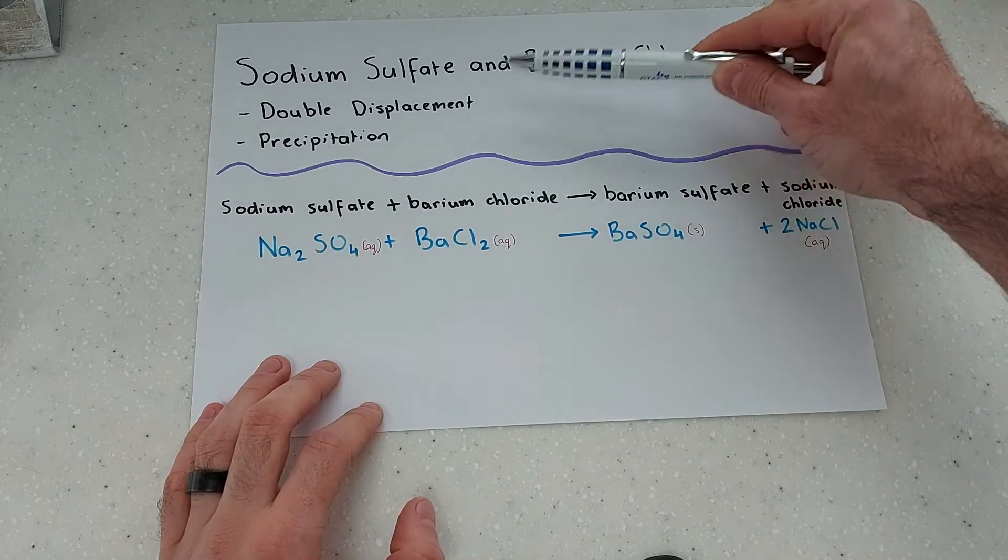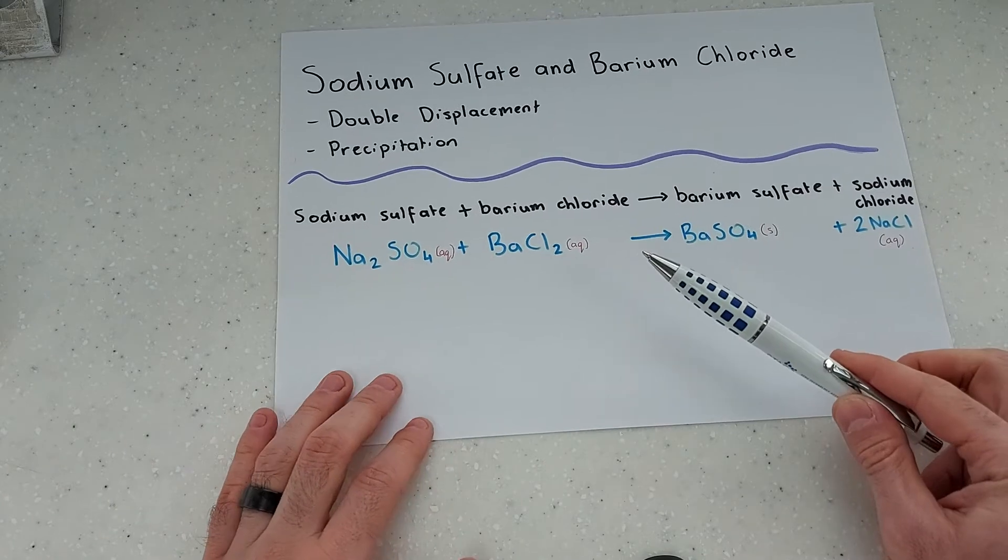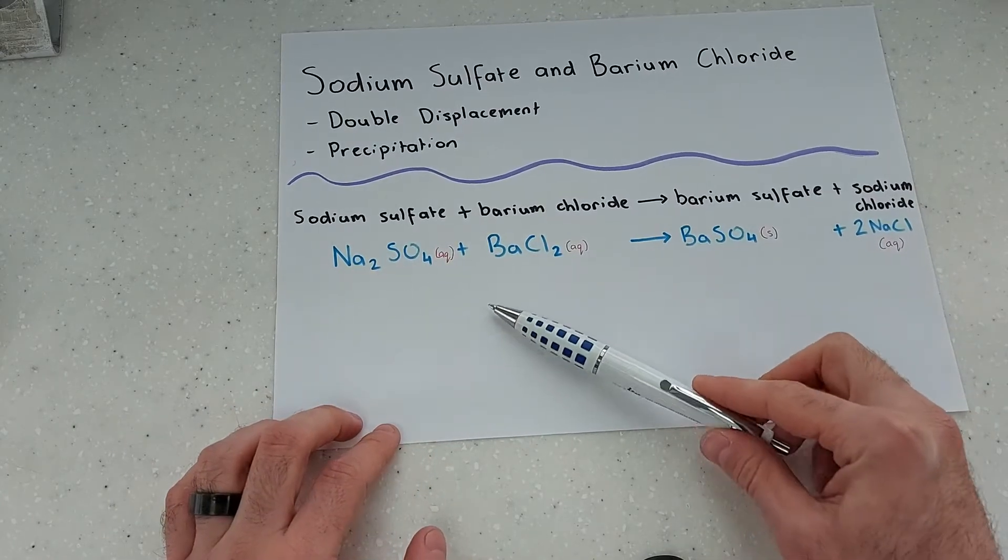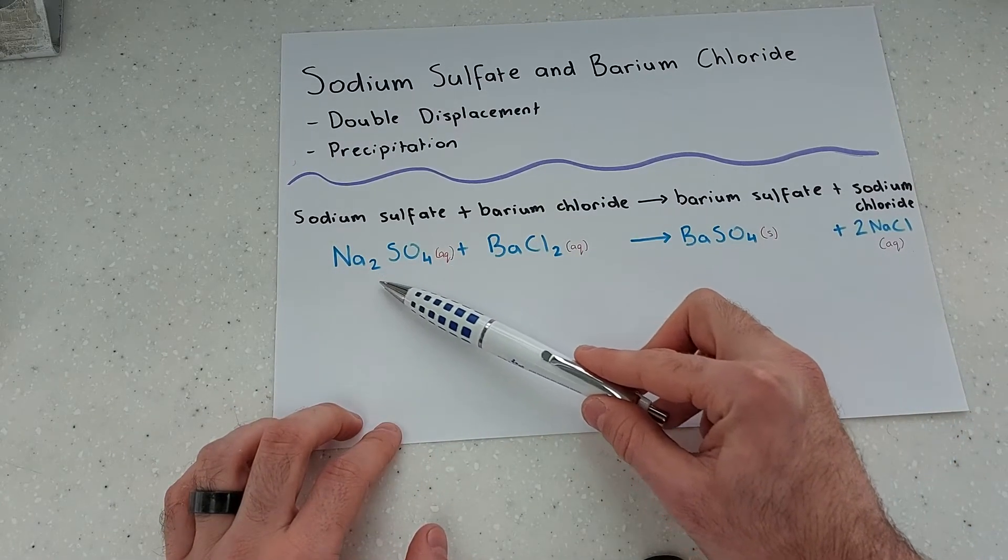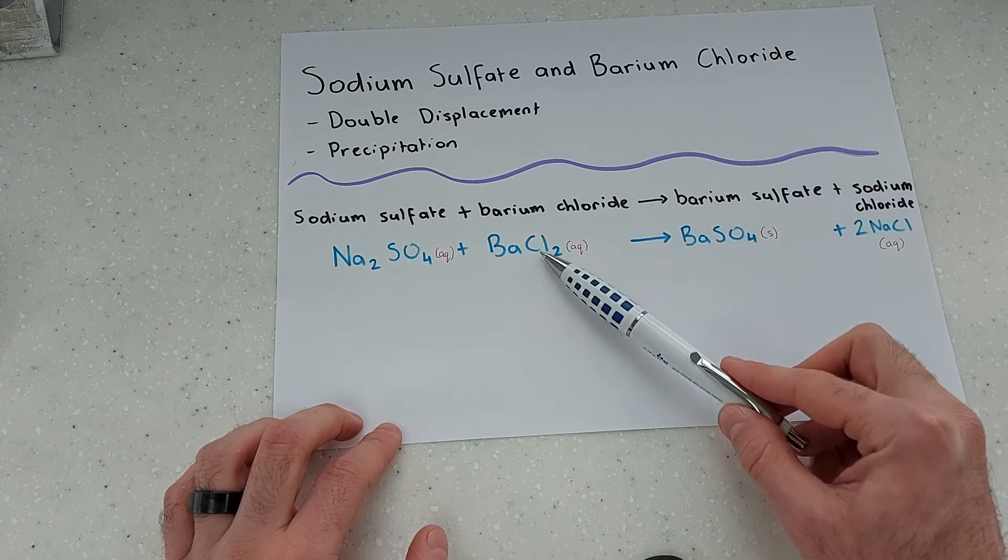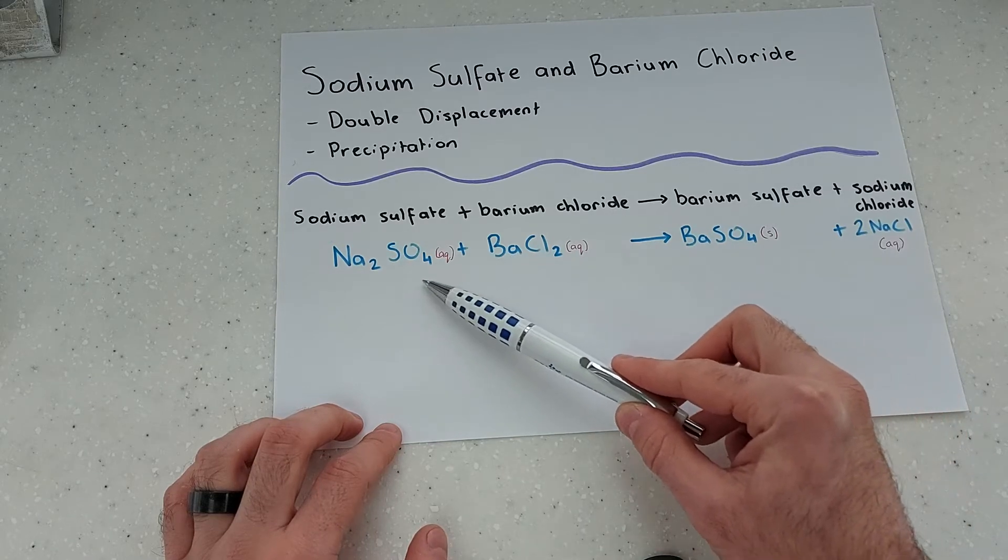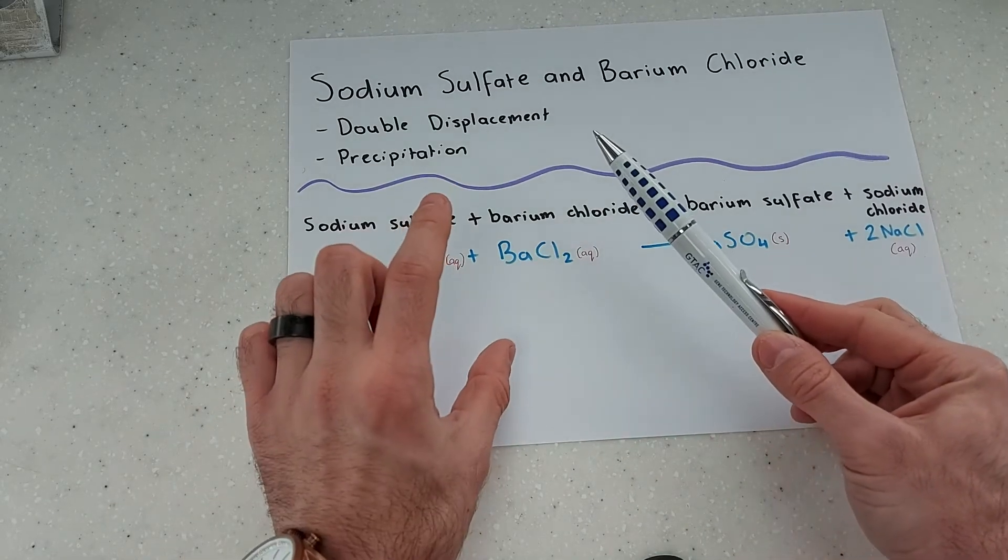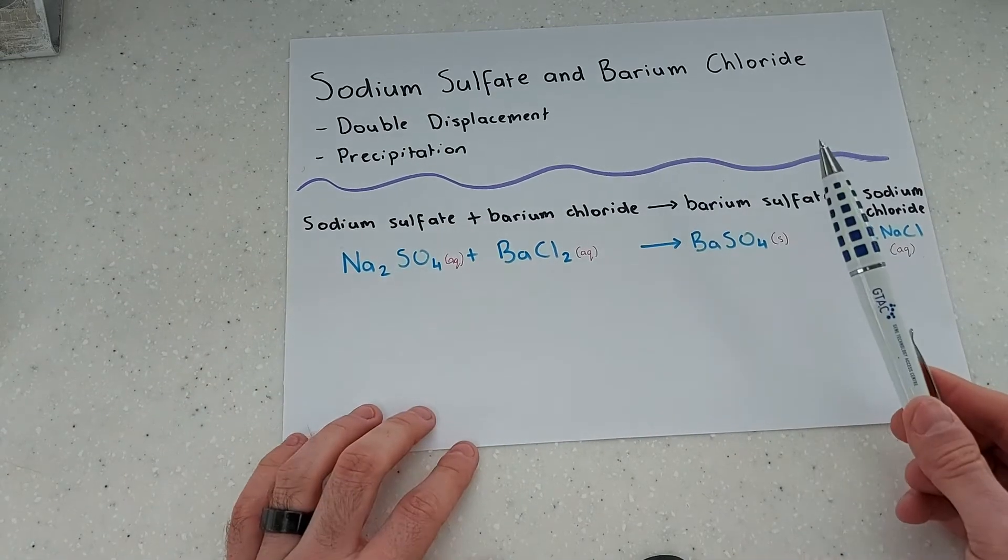Now because this is a double displacement reaction you'll notice that the reactants are swapping partners. The sodium will join on with the chloride and the barium will join on with the sulfate. They're both swapping over.